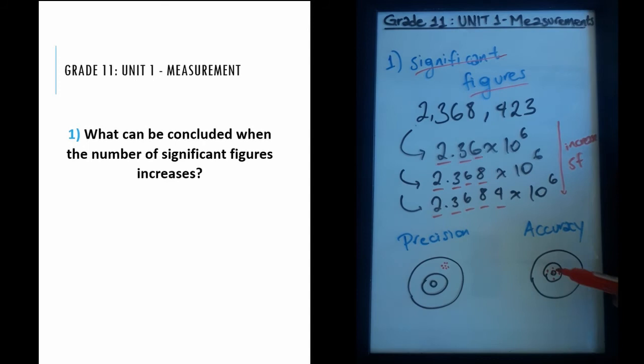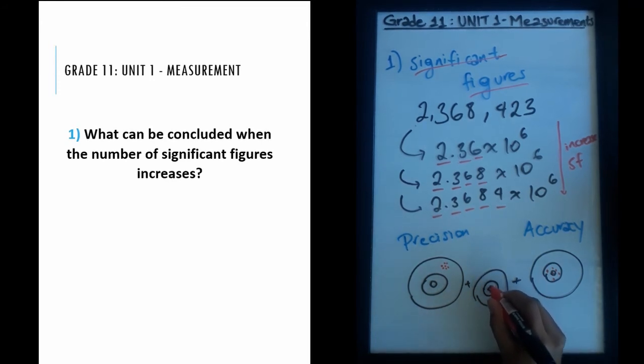An accurate measurement, on the other hand, means that you're close to the true value, but you're not necessarily close to each other. So you're good at your aim, but you're not really good at getting the same aim multiple times. So you can conclude that a precise and an accurate measurement would be both close to each other, your multiple aims are close to each other, and on top of that, they're close to the true value. That's a combination of both precision and accuracy.